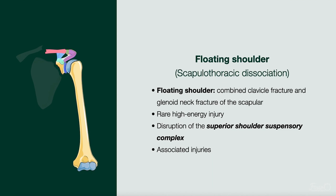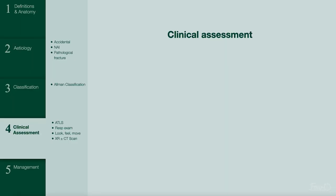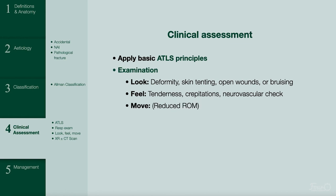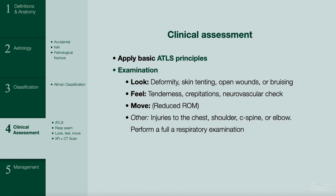We have reviewed two specific examples. How would you generally approach a patient? As with all trauma patients, one must apply basic ATLS principles — first quickly identify and stabilize life-threatening injuries. On examination, you'll use the look, feel, and move approach. Look for deformity, skin tenting, open wounds, or bruising. Feel for tenderness and crepitus, and perform a neurovascular check. On movement, note reduced range of motion. Make sure to look for other injuries to the shoulder, spine, or elbow, and perform a proper respiratory examination to exclude a pneumothorax.